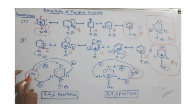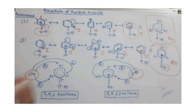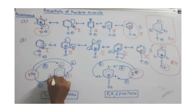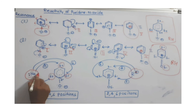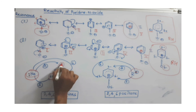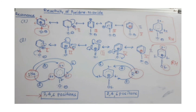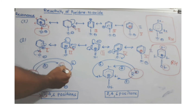In the presence of a nucleophile — an electron-rich species — it will attack the electron-deficient carbons where partial positive charge is present. We observed positive charges at positions 2, 4, and 6. Therefore, nucleophilic substitution takes place at carbon numbers 2, 4, and 6. Since positions 2 and 6 are identical, substitution occurs mainly at position 2. If position 2 is blocked, it moves to position 4.